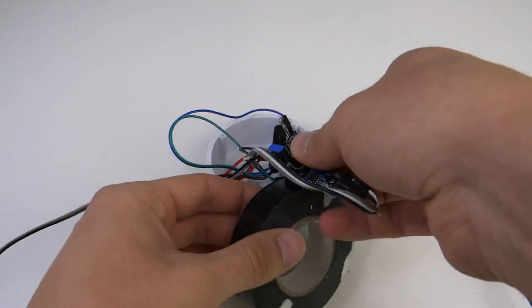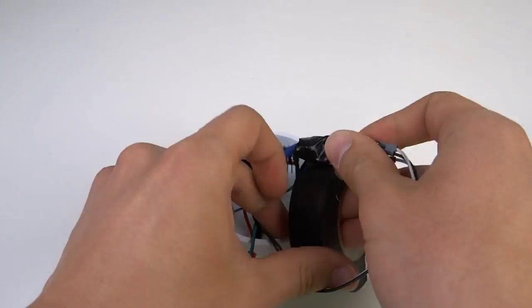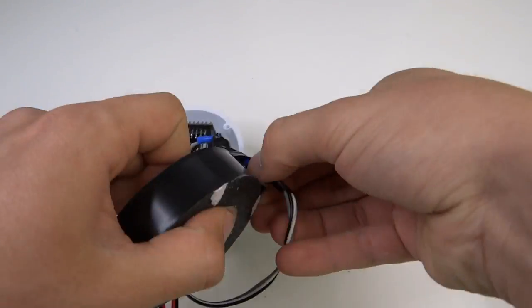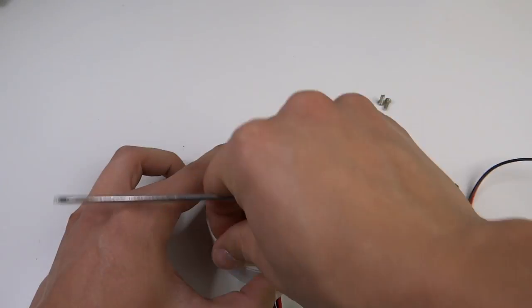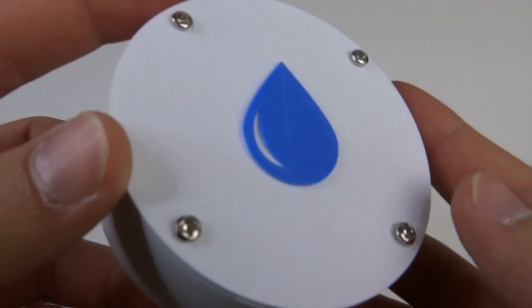I put everything inside my 3D printed case. But before that, I covered everything with tape just to avoid any shorts. To close the enclosure you just have to screw down four screws.